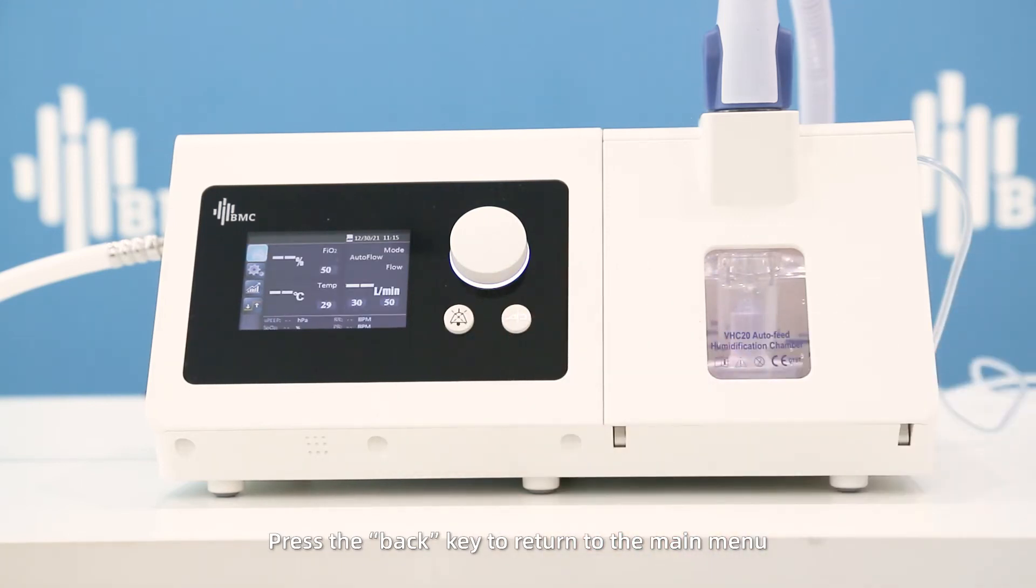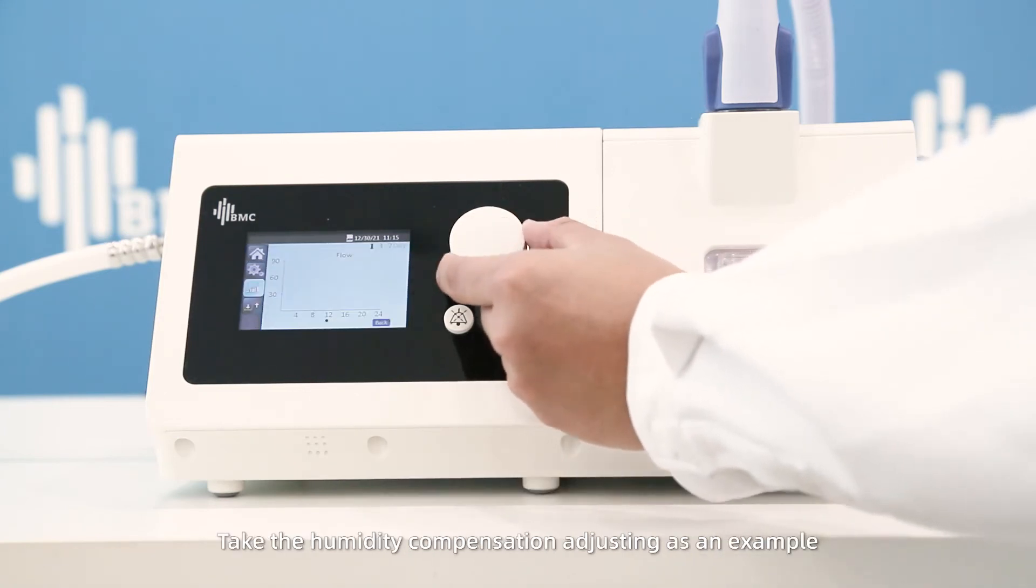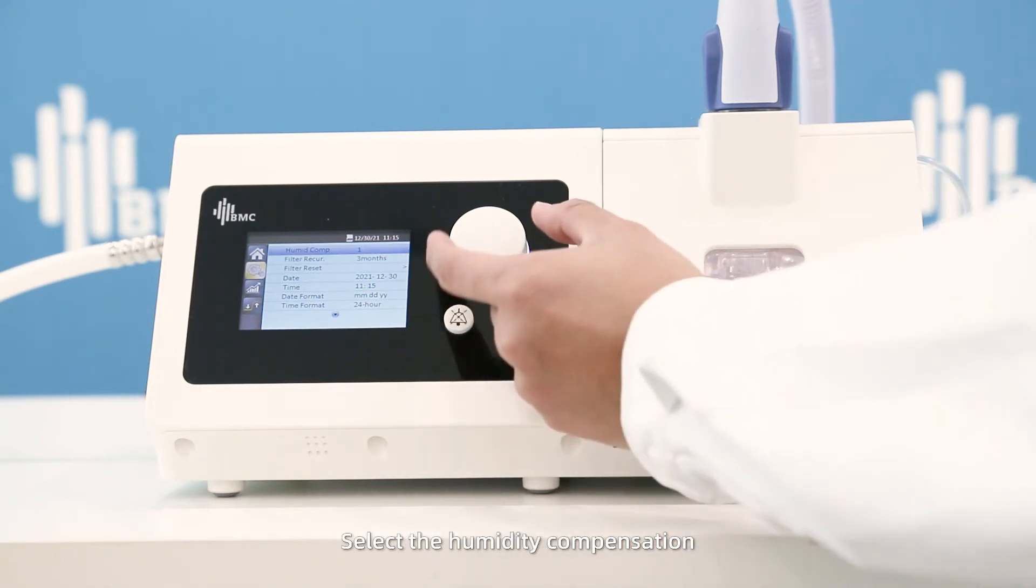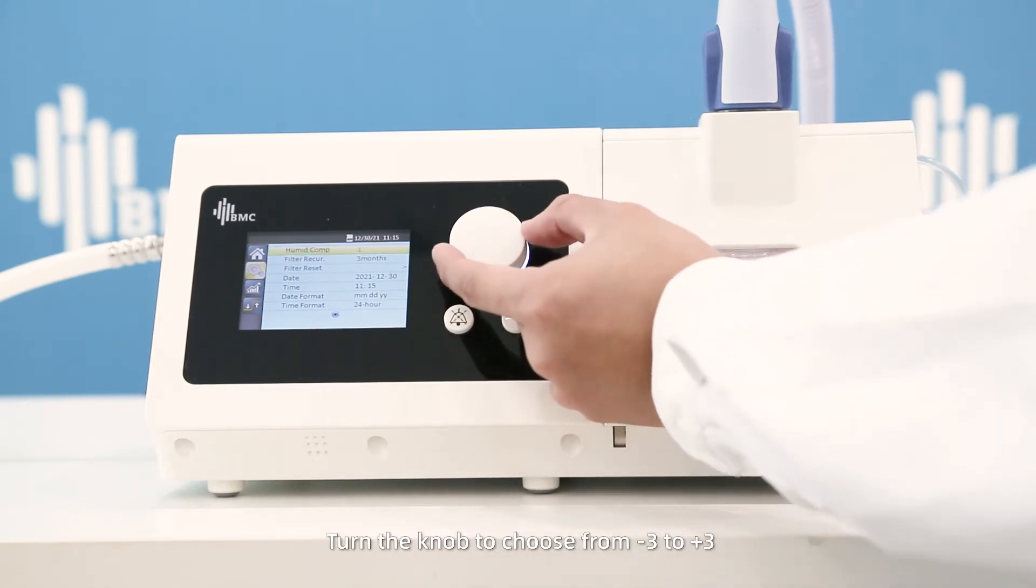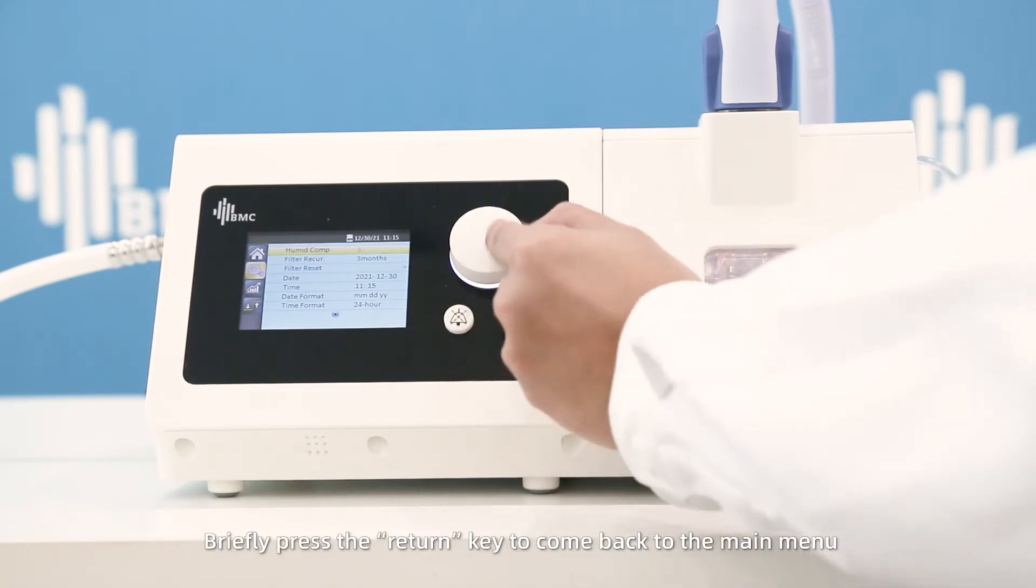Rotate the knob to select the setting interface. Take the humidity compensation adjusting as an example. Select the humidity compensation, turn the knob to choose from -3 to +3, and briefly press the return key to come back to the main menu.